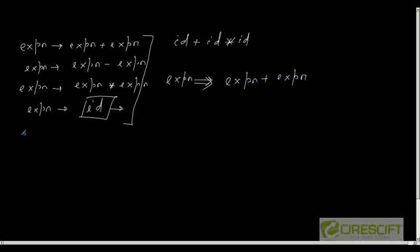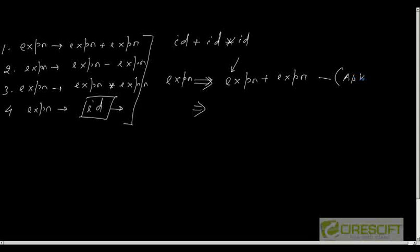I start with expression and apply the first rule to get expression plus expression. In leftmost derivation, we apply the production rules of the grammar on the leftmost non-terminal first. So I apply on the leftmost non-terminal expression. Let me number the productions 1, 2, 3, 4. To generate id plus id into id, I apply production 4 to replace the leftmost non-terminal expression by id.